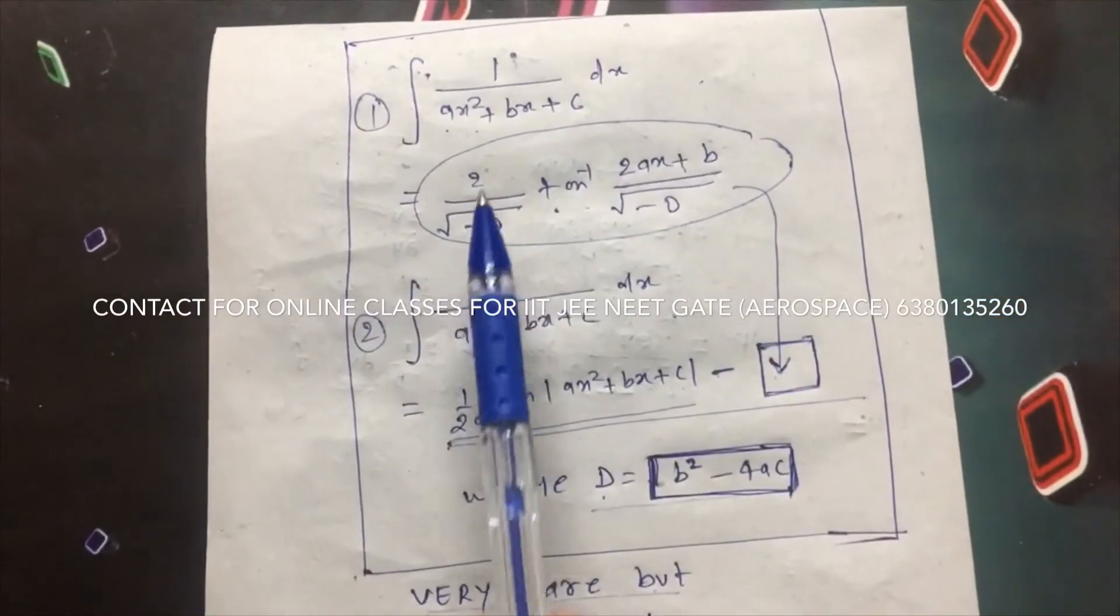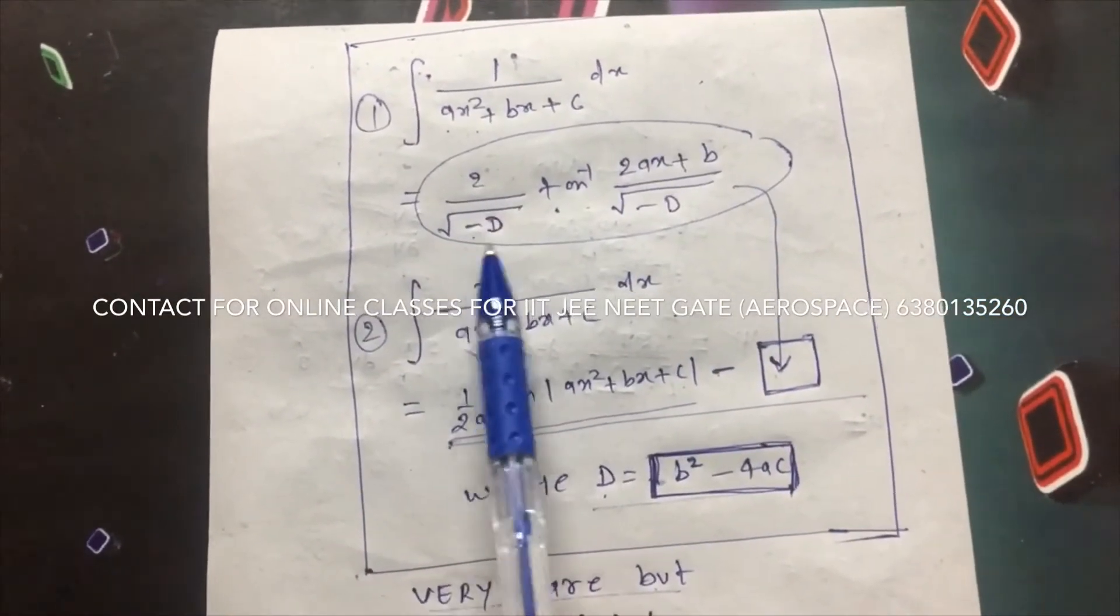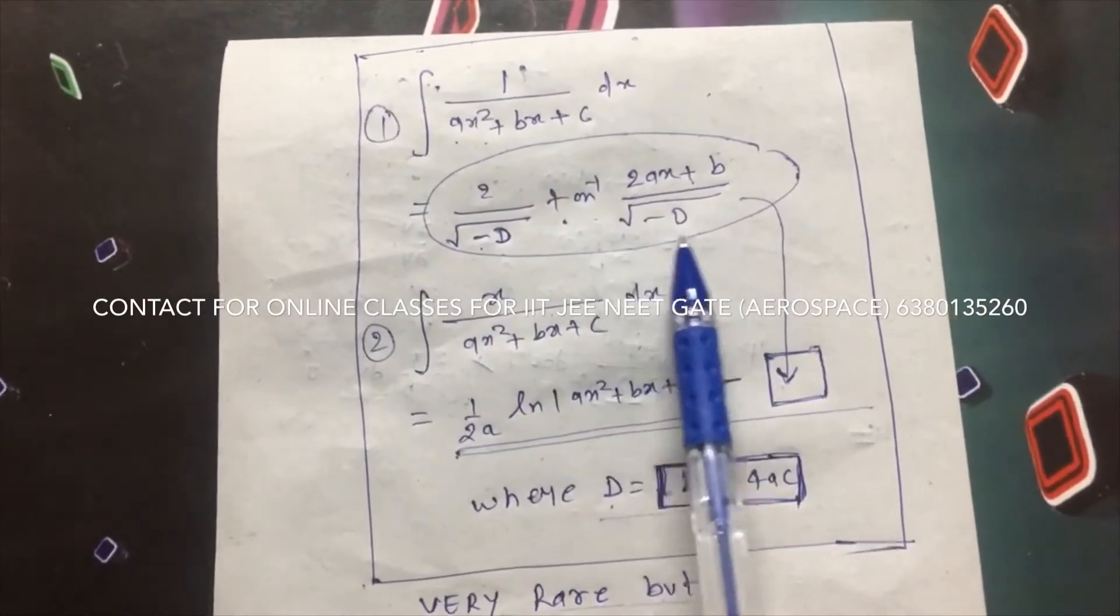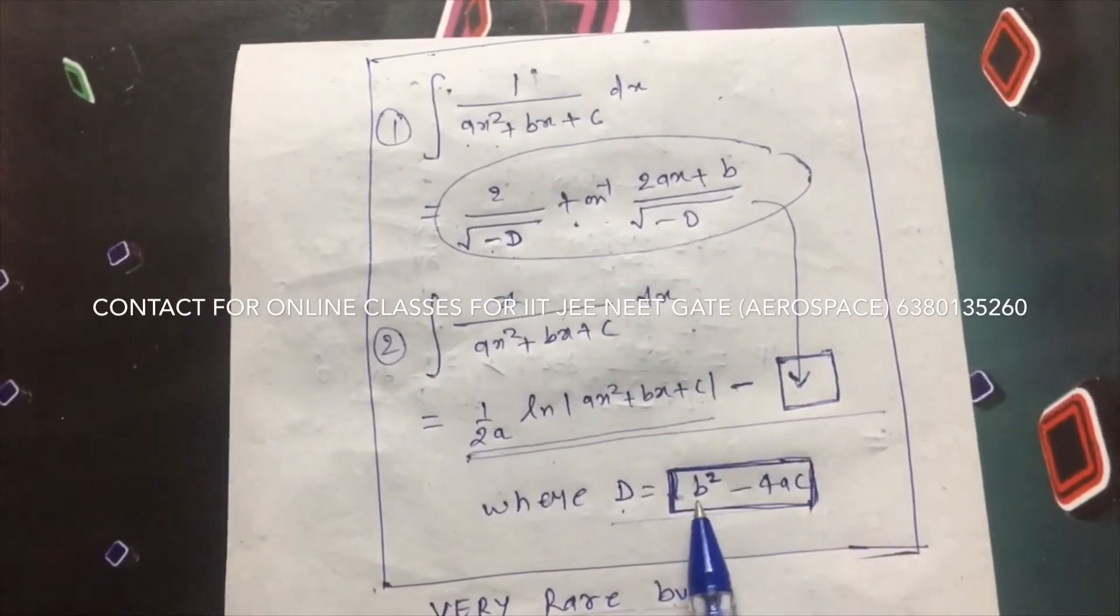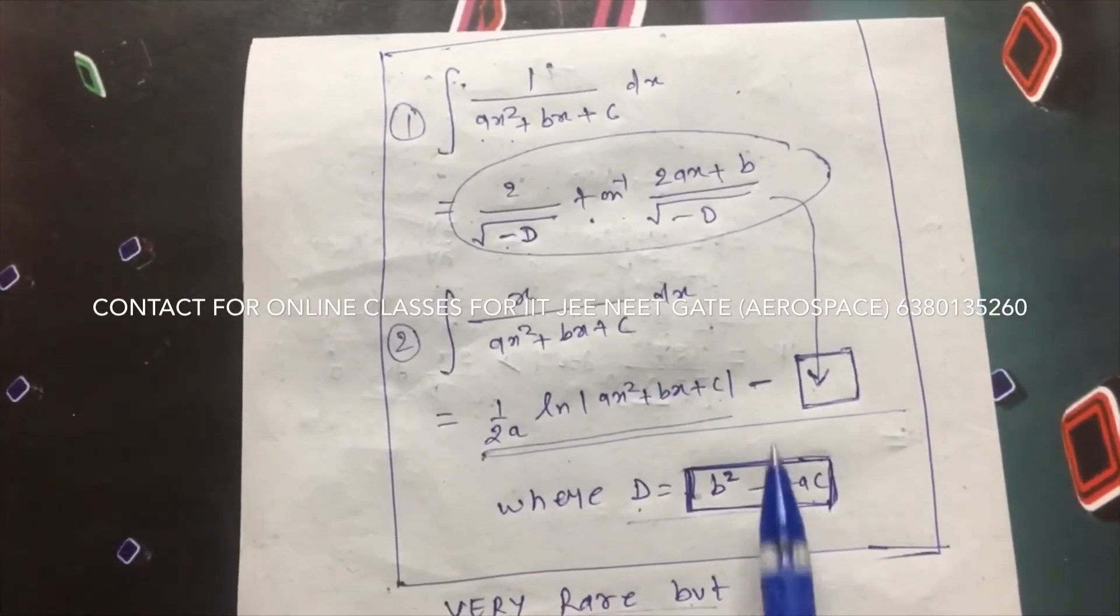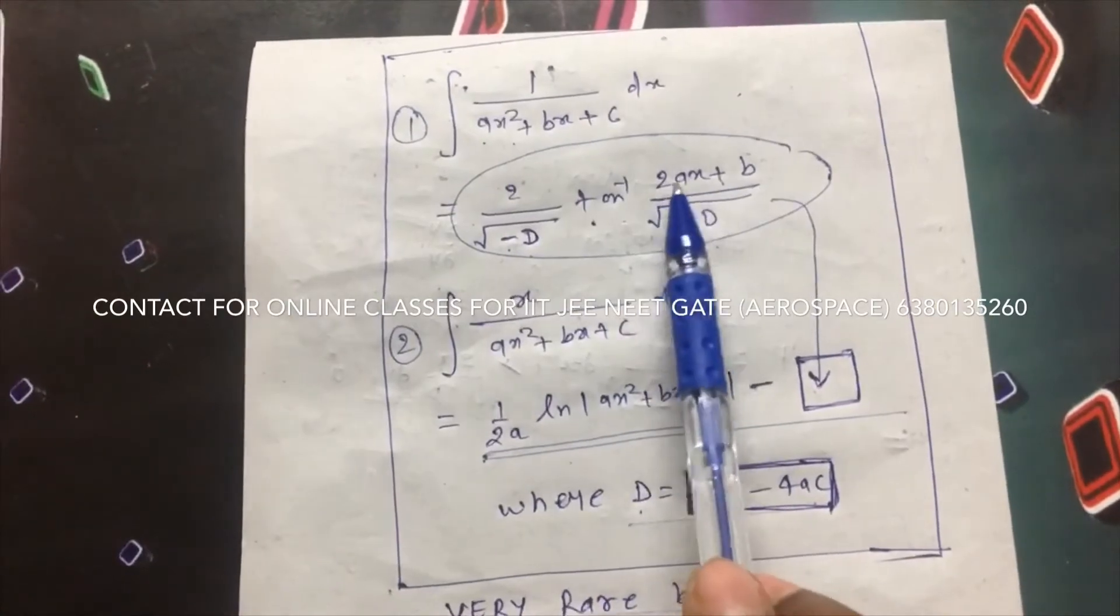So the direct formula you remember is 2 by under root minus d, where d is b square minus 4ac, the discriminant. And this is tan inverse 2ax.